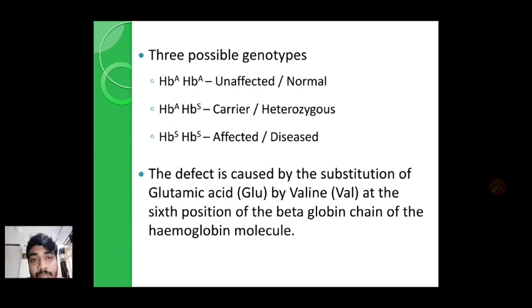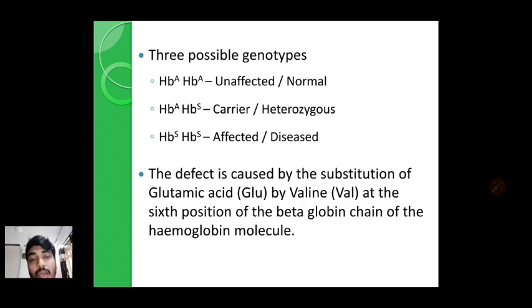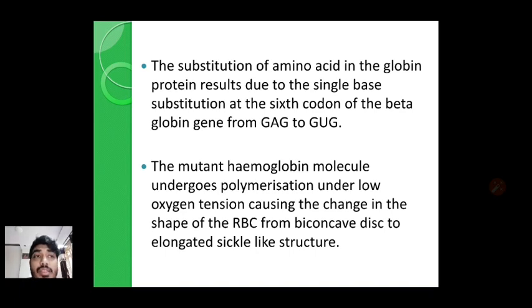In sickle cell anemia, the gene which codes for the beta globin chain consists of glutamic acid at the sixth position, but due to point mutation this glutamic acid is replaced by valine amino acid, and due to that the hemoglobin molecule gets affected — a mutated or affected hemoglobin molecule is produced. This substitution in the globin protein results from a single base substitution, that is a point mutation at the sixth codon.